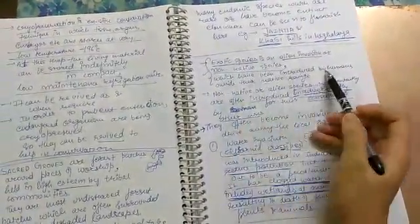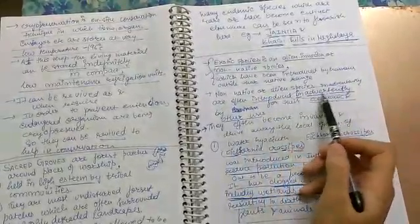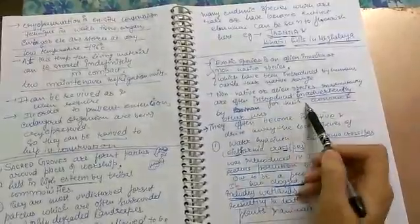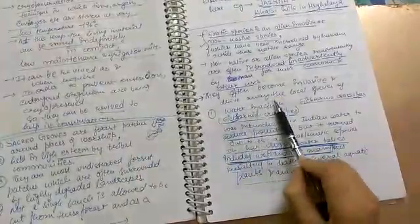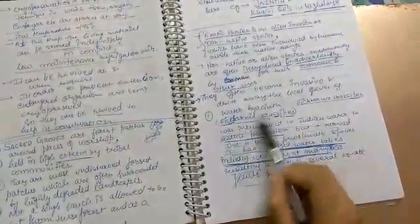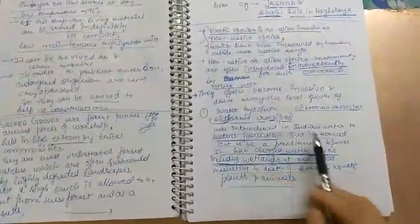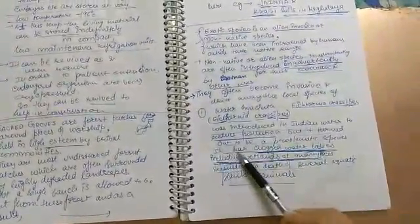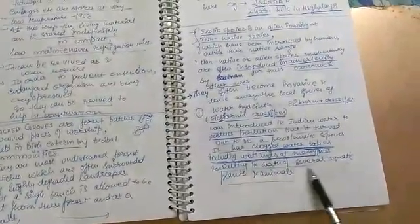Exotic species is an alien invasion or non-native species which have been introduced by humans outside their native range. Non-native or alien species invasions are often introduced inadvertently for their economic and other uses. They often become invasive and drive away the local species. Example: water hyacinth, Eichhornia crassipes, was introduced in India to reduce pollution, but it turned out to be a problematic species as it clogged water bodies including wetlands in many places, resulting in death of several aquatic animals.